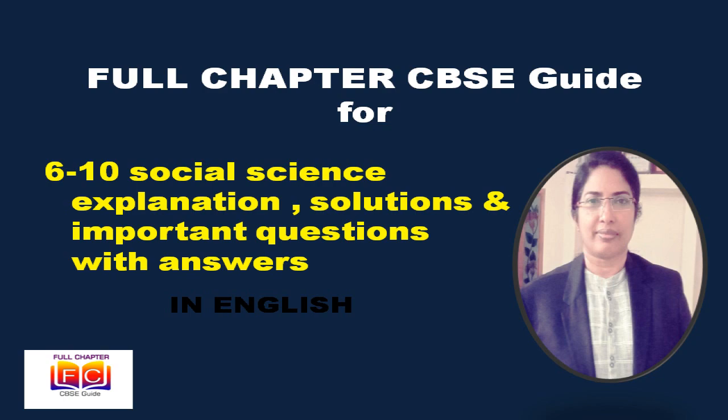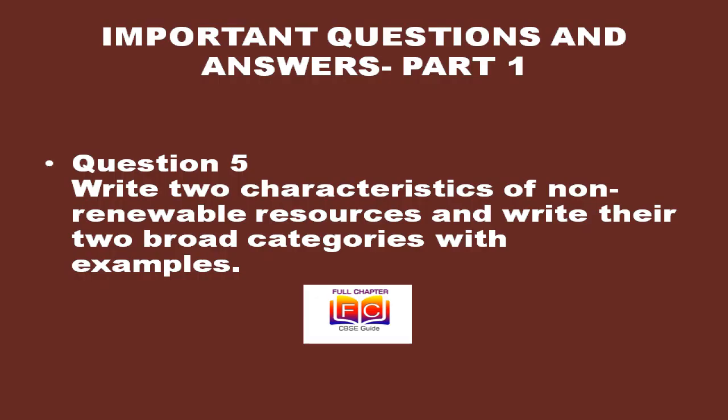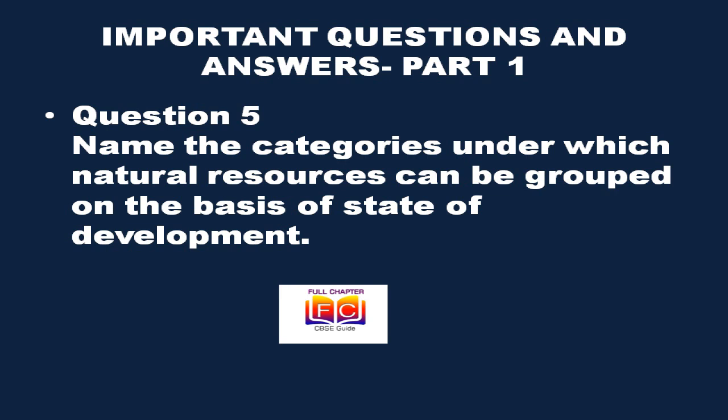Write two characteristics of non-renewable resources and their two broad categories with examples. Characteristics: they cannot be recycled and get exhausted with use; they take millions of years in their formation. Two broad categories: recyclable resources (e.g., metals) and non-recyclable resources (e.g., fossil fuels). On the basis of state of development, natural resources can be grouped as: potential resources, developed resources, stock, and reserves.